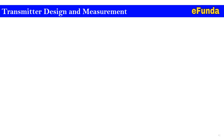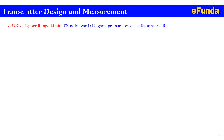Moving on to design and measurement related questions, one should know the fundamentals of terms mainly related to transmitter design and measurement. First is URL — Upper Range Limit — that means the transmitter is designed at the highest pressure with respect to the sensor.